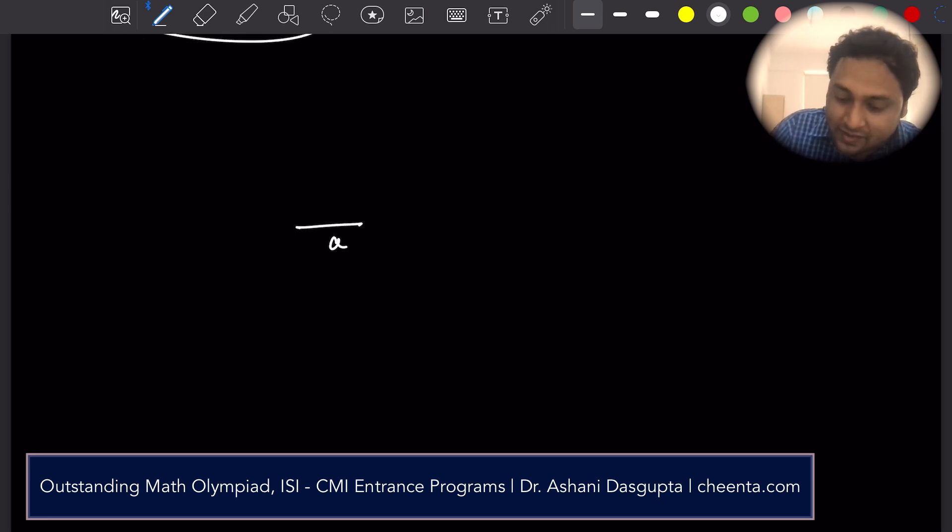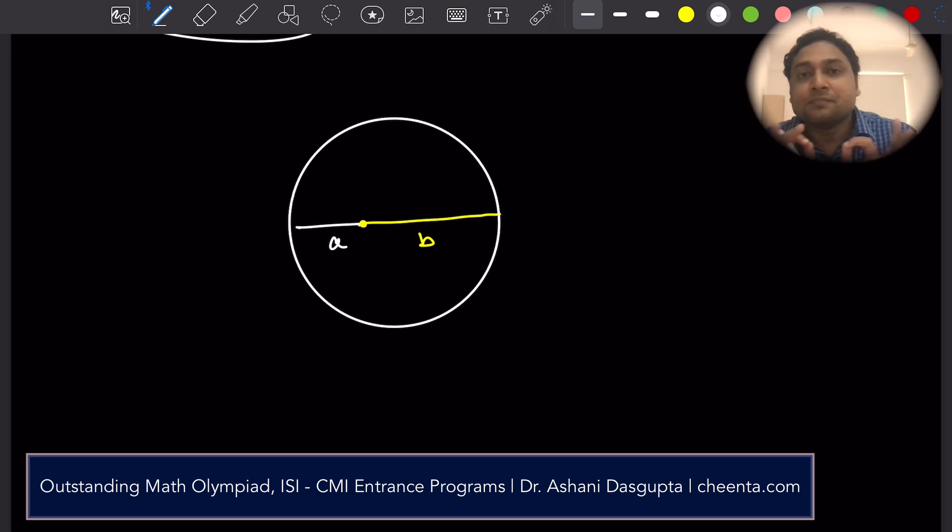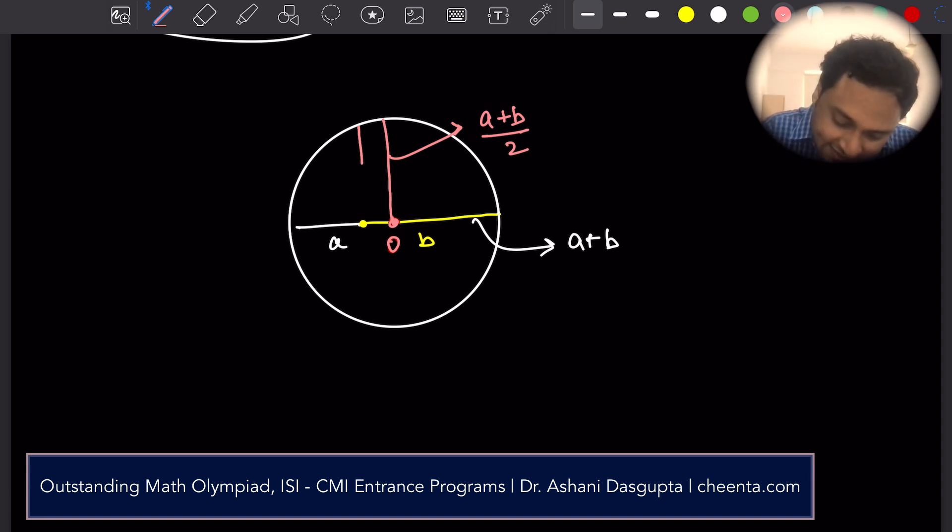Suppose a is this segment, and b is this segment. And if I make a circle with a plus b as the diameter. So this is the diameter. Diameter is a plus b. Then the radius of this circle, so this is the midpoint, suppose o. Then the radius of this circle is the arithmetic mean of the two numbers. Obviously, radius is half of the diameter. So this length here is square root of ab, which is the geometric mean. So now, from this picture, can you tell me a segment, this is a challenge too. Can you tell me a line segment whose length equals the quadratic mean?